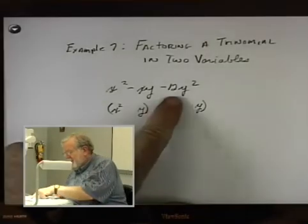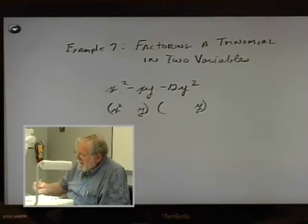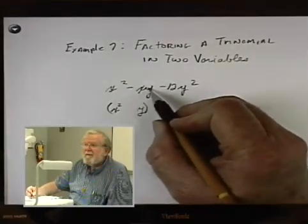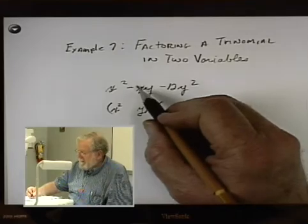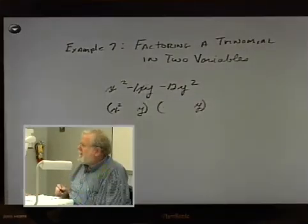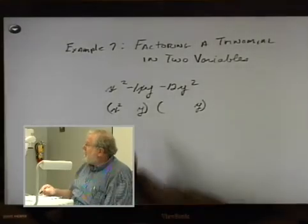Now there's some number out in front of that y. We don't know what it is yet. What number is out in front of this xy? There's a one out here, right. If you don't have a number, there's a one out there. In this case, it's a negative one, right?